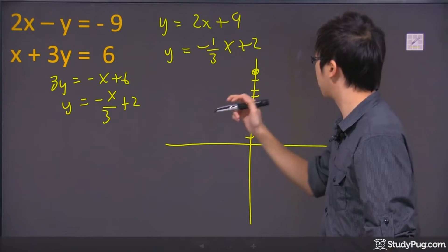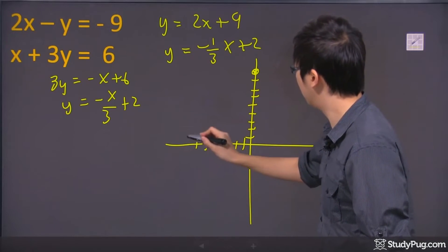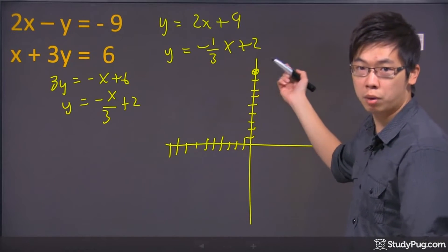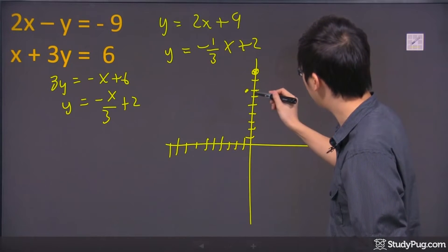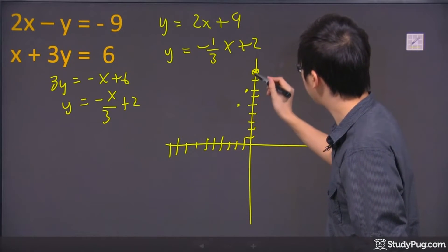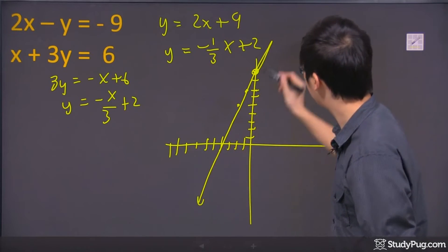That's the slope right there. In another way, you can go the other direction. Instead of going up 2 over 1 because I run out of space, I can go down 2, left 1. And down 2, left 1 again. So I get a straight line coming down this way.